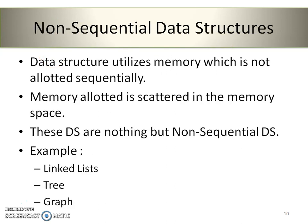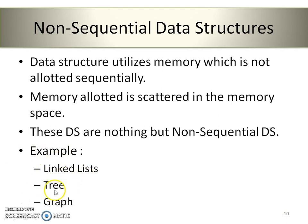Let's move forward to non-sequential data structures. As the name suggests, they do not utilize memory in sequence — the memory allocated is scattered in the memory space. Examples of non-sequential data structures are linked list, tree, and graph.